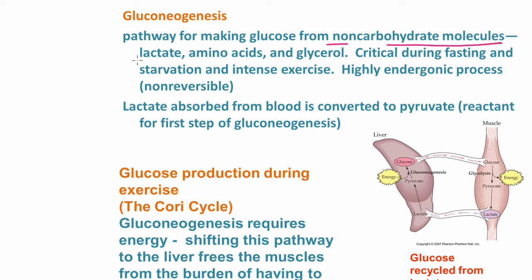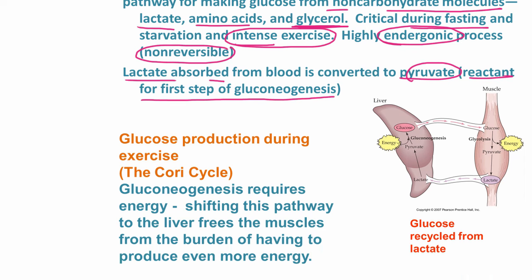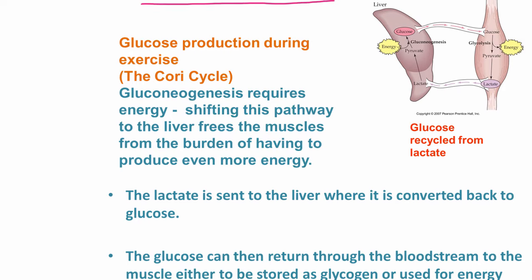Gluconeogenesis is the pathway for making glucose from non-carbohydrate molecules such as lactate, amino acids, and glycerol. It is especially important during fasting, starvation, and intense exercise. This is an endergonic and non-reversible process. Lactate absorbed from the blood is converted to pyruvate, which is the reactant for the first step of gluconeogenesis.